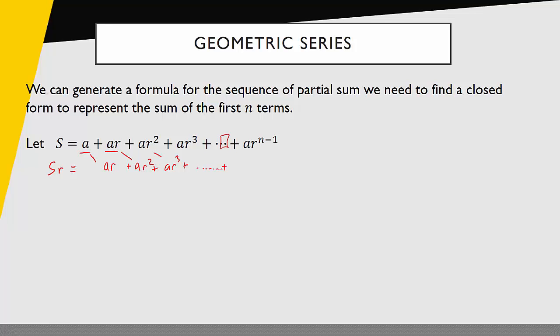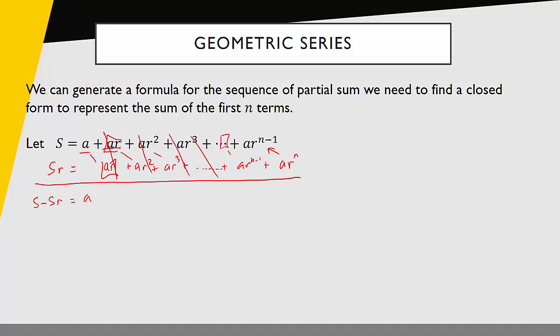Until the n minus 2 term, when multiplied by r, gives ar to the n minus 1. And the last term times r gives a times r to the n. So now I have the original series and the r-multiplied series. I can subtract these two equations. On the left I get S minus Sr. On the right, ar minus ar cancels out, and all the in-between terms cancel, leaving a minus ar to the n. So I have this nice condensed equation.